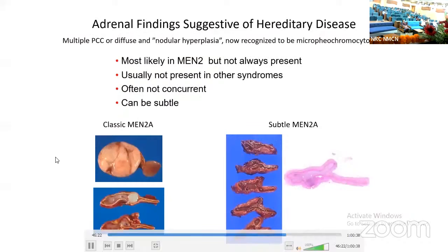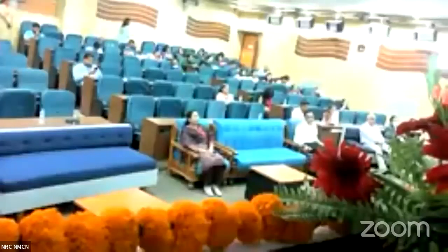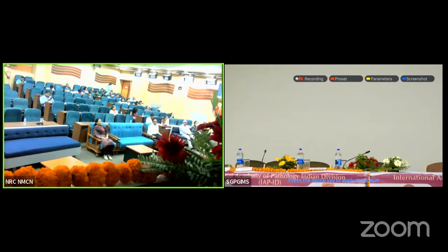Additional findings are that multiple tumors in the adrenal are almost always characteristic of MEN2, but even in MEN2 are not always present, and usually not present in other syndromes — often not concurrent and can be subtle. So there's no question about the multiple tumors in this adrenal, but in this other adrenal the presence of small nodules was quite subtle and can be missed unless carefully examined.